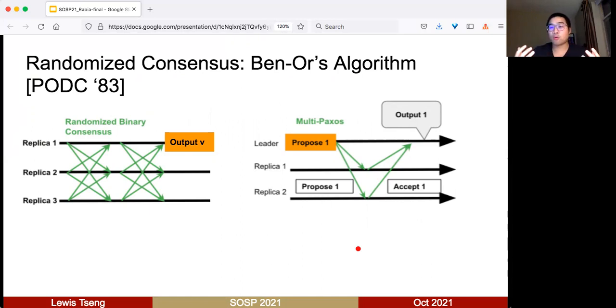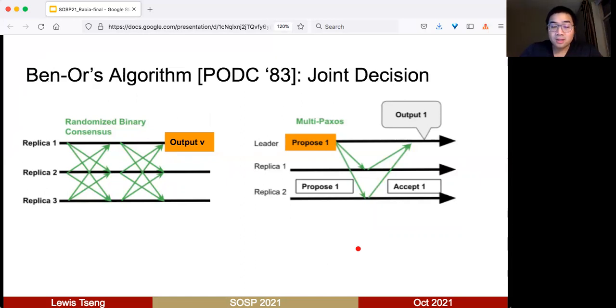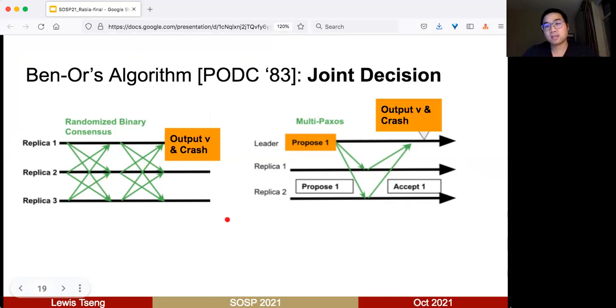We looked at a very old paper by Ben-Or, which is randomized consensus. The idea is that replicas make joint decisions, so there's no notion of leader at all. You do all-to-all communication and based on some rules, sometimes randomized rules, you can output something. Why is joint decision good? Consider the case when only one node fails. On the right-hand side with MultiPaxos, if the leader fails, it's not easy to recover. But in the case of Ben-Or, because you have joint decision, replicas 2 and 3 know exactly what replica 1 has decided, which makes the process much simpler.